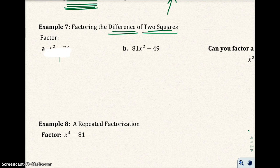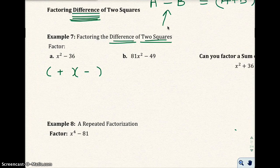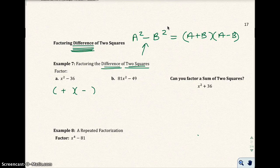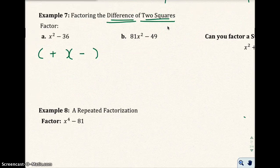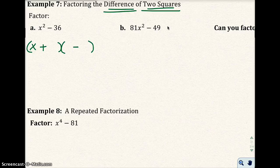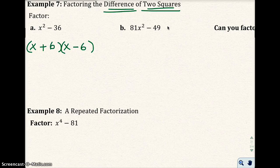So we have a difference of two squares. If that is true, then we have two factors and we should have different signs in the middle. We're going to put x and x in the first position because x squared comes from x times x, and then 6 and 6 because 6 times 6 makes 36.